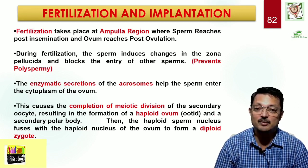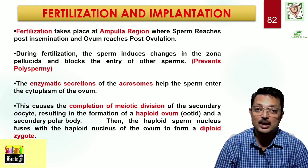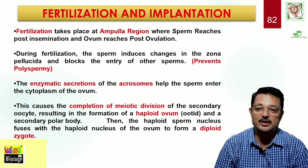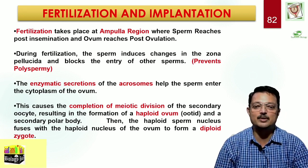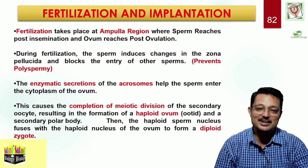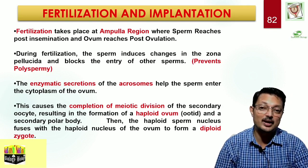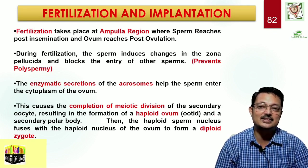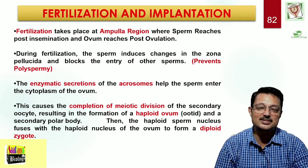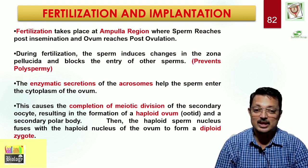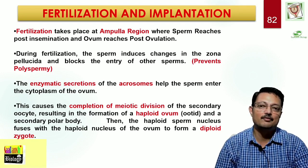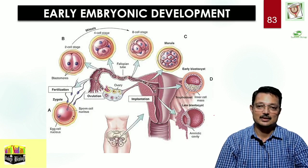To prevent polyspermy, two mechanisms exist: activated calyx formation and destruction of receptor molecules on the sperm. Enzymatic secretion of the acrosome helps the sperm enter the cytoplasm of the ovum. This causes completion of meiotic division of the secondary oocyte, resulting in a haploid ovum. The PCL-zeta protein activates the secondary oocyte to complete meiosis II, forming a haploid ovum and polar body. Finally, there is amphimixis — the fusion of male and female pronuclei.